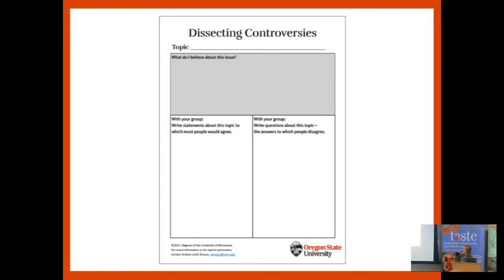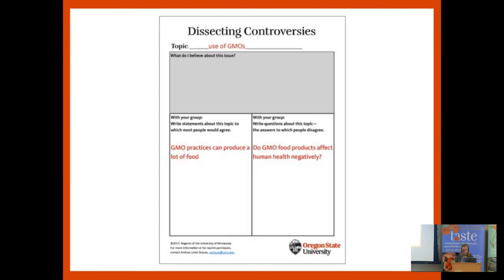The first group section is: write statements about this topic to which most people would agree. The second part is: write questions about this topic, the answers to which people disagree. For example — GMOs. These are actual examples from class. After the personal reflection on what do I believe, with their group they wrote: 'GMO practices can produce a lot of food, which can feed a lot of people' — something everyone in the group could agree upon. Then the questions: do GMO food products affect human health negatively? Do they affect whatever else negatively? They had all these other questions.